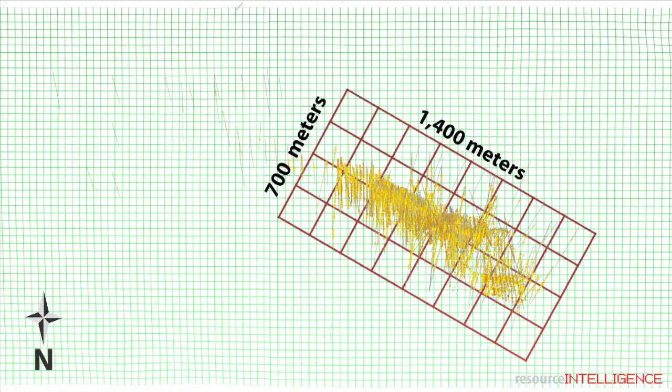Gold mineralization at Magino measures 1,400 meters by 700 meters, and presently extends to a depth of greater than 600 meters.